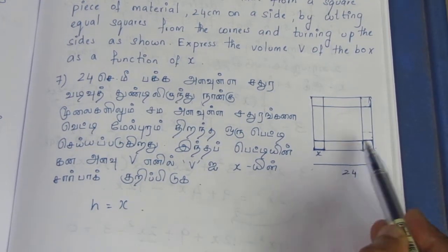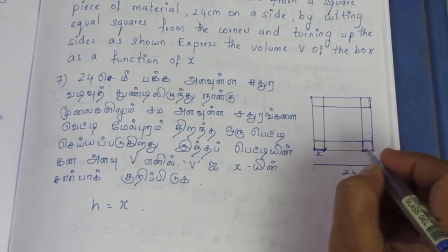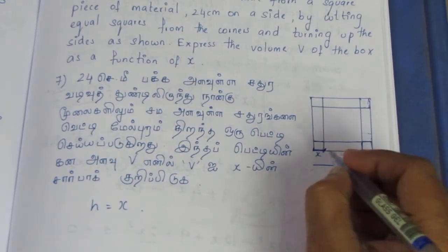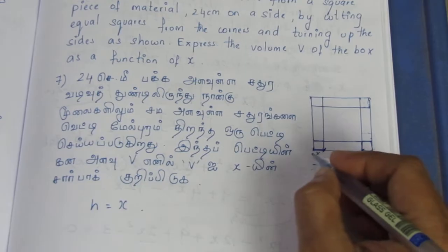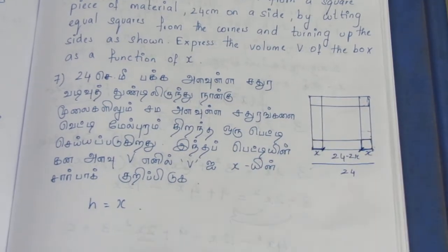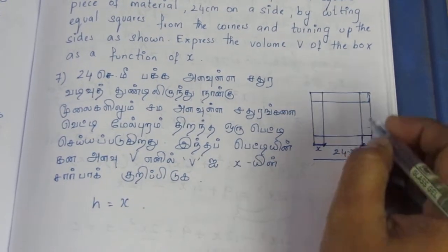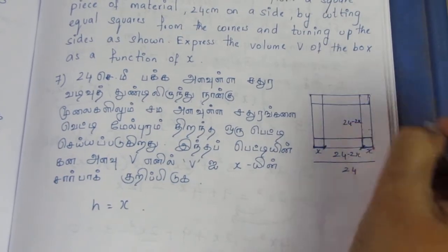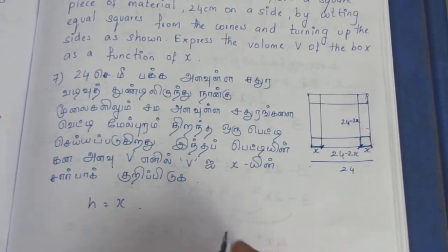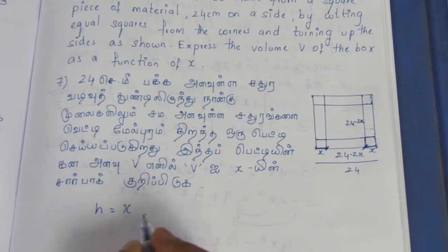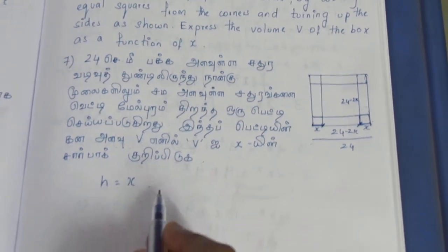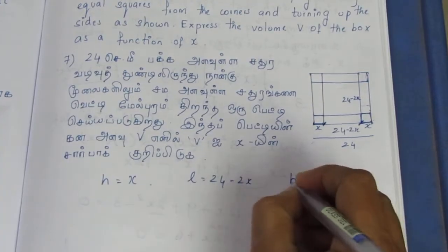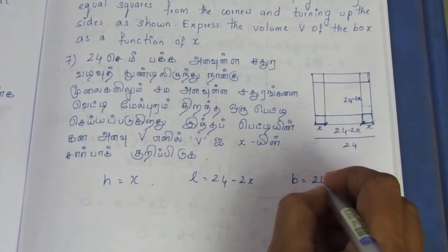It's better — this is why we have 24 minus 2x. So minus x, minus x — length and breadth are both 24 minus 2x. It's x on each side, so length is 24 minus 2x and breadth is 24 minus 2x.